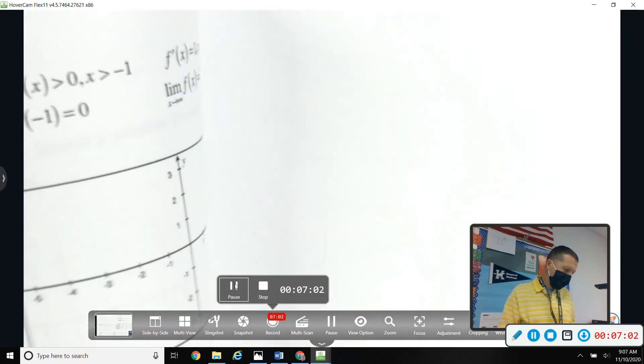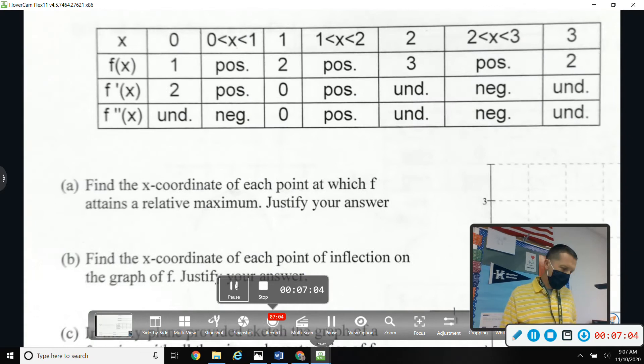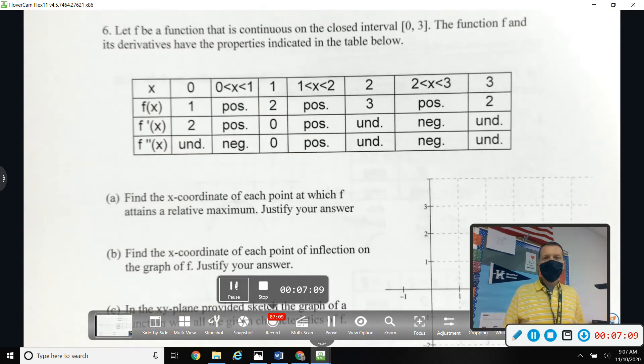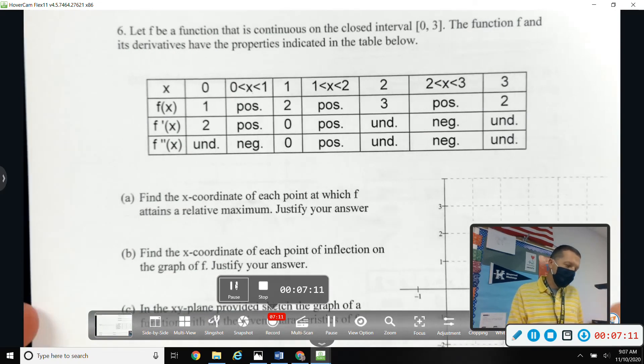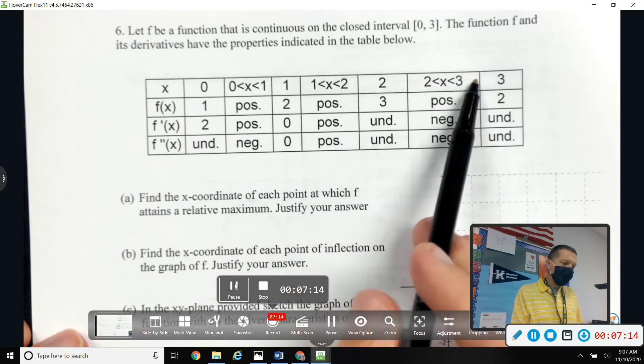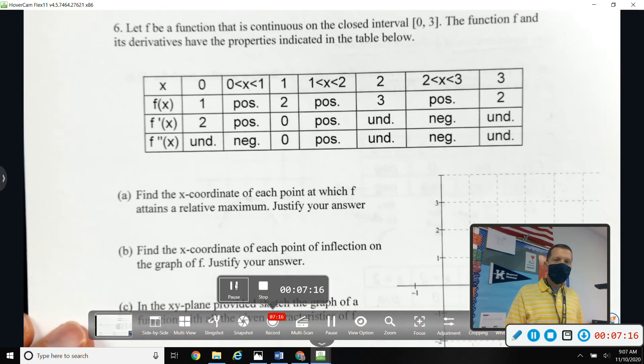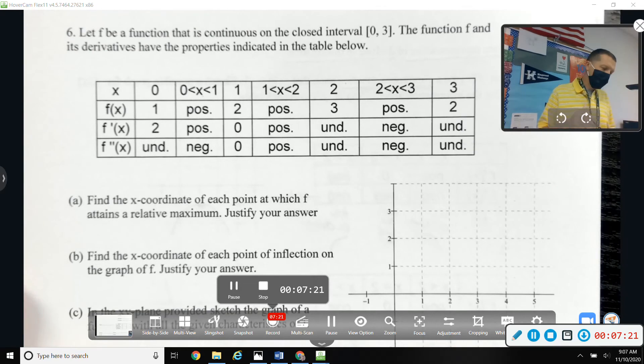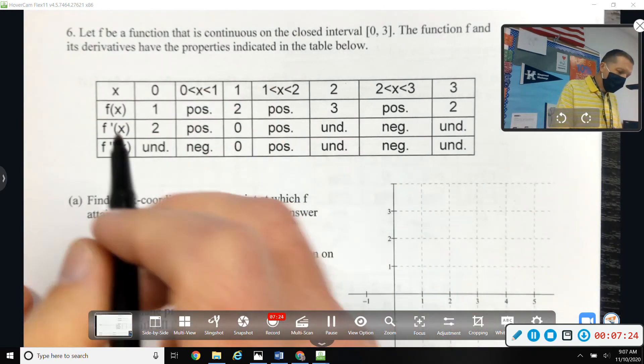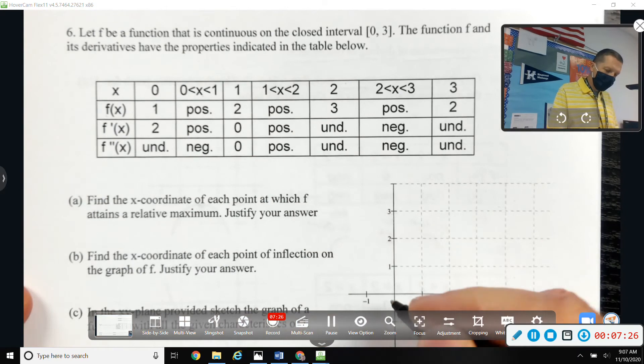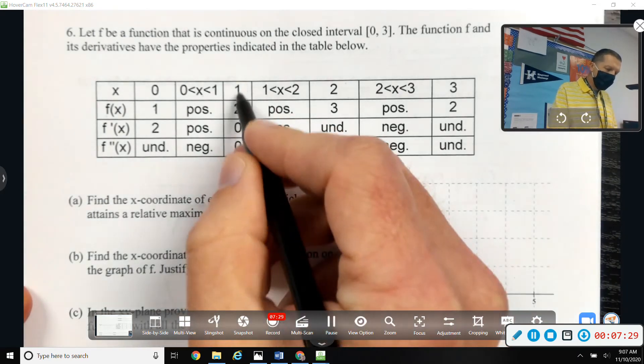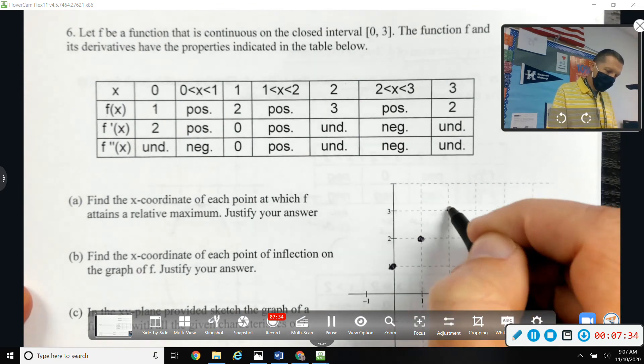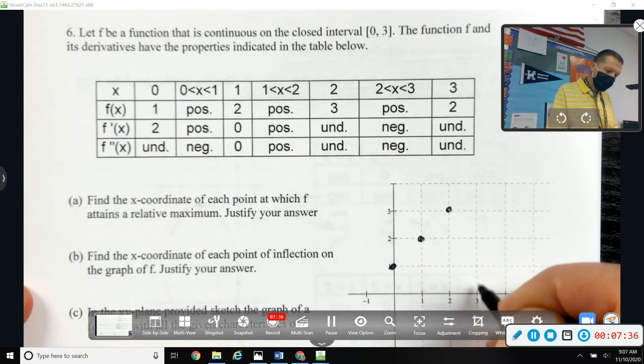Now let's see. Why don't you try number 6? It's the same stuff, it's just there's more intervals. It's not just left of 2 and right of 2. It's 0 to 1, 1 to 2, 2 to 3. There's a lot going on. I think I would start - help you get started here - I would start with the points. All right, f of 0 is 1, f of 1 is 2, f of 2 is 3, f of 3 is 2.